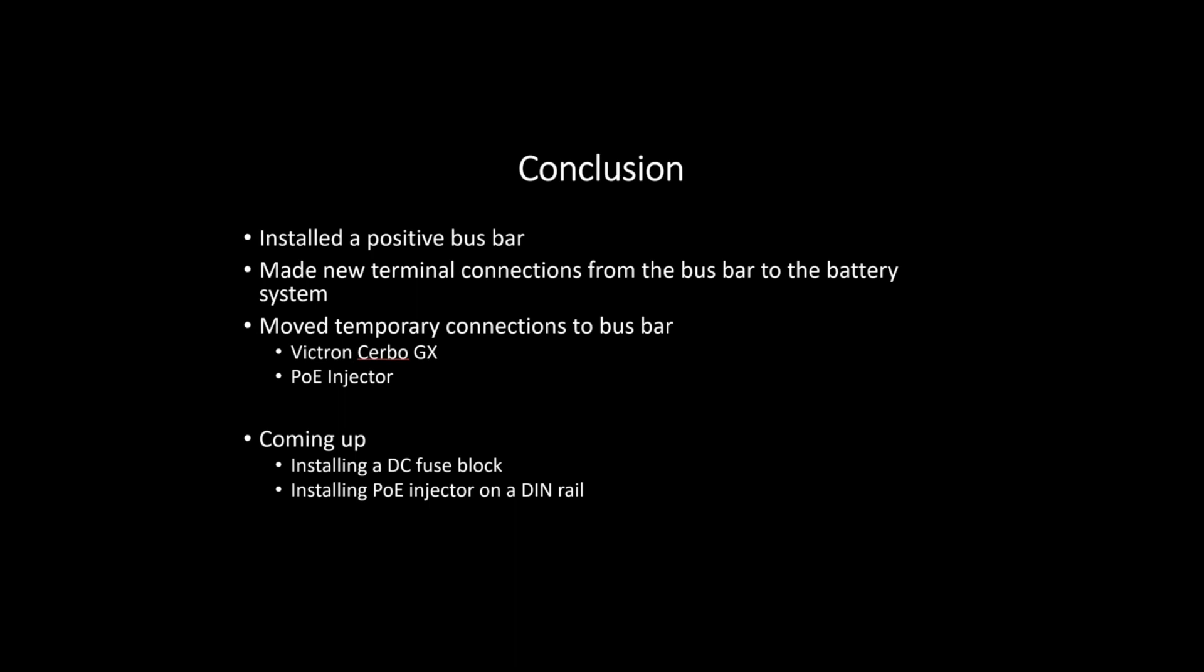To wrap things up, we installed a positive bus bar to help with cable management, made new terminal connections from the bus bar to the battery system. Then we moved some temporary connections to the bus bar, such as our Victron Cerbo GX and our power over ethernet injector. Coming up in the next video, we're going to properly mount our DC fuse block and power over ethernet injector. Make sure you stay tuned for the next episode. If you have any comments or questions about this video, leave them down in the comments section. If you found this video helpful, please give it a like, and if you're not already subscribed, please do so. We'll see you next time here on Dave's Off Grid, On Grid Adventures.